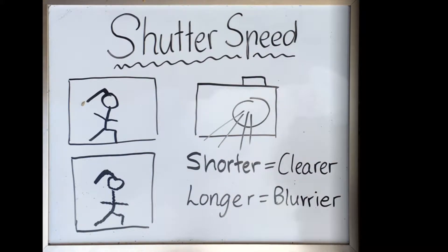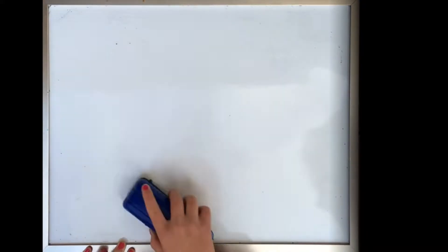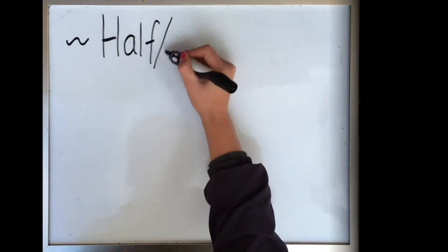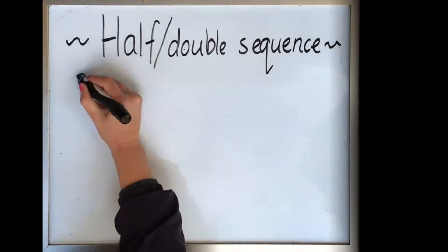Shutter speeds are affected by timing. They are measured in seconds and fractions of a second. The shorter the time, the clearer the image, therefore the longer the time, the blurrier it is.